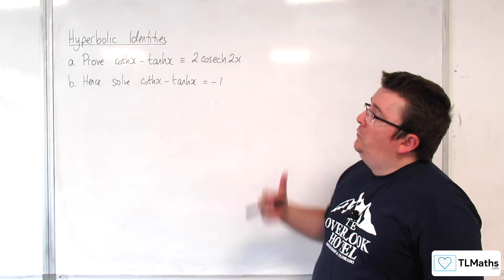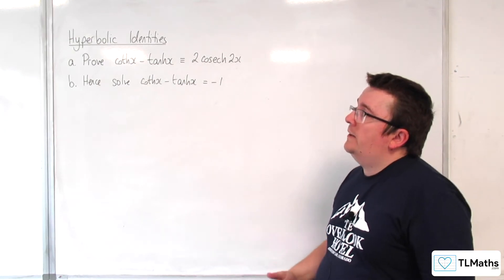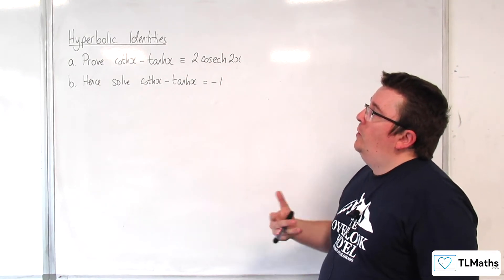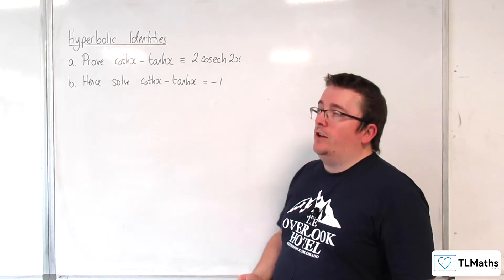In this video, we're first of all going to prove that coth of x take away tanh of x is equivalent to 2 cosh of 2x.